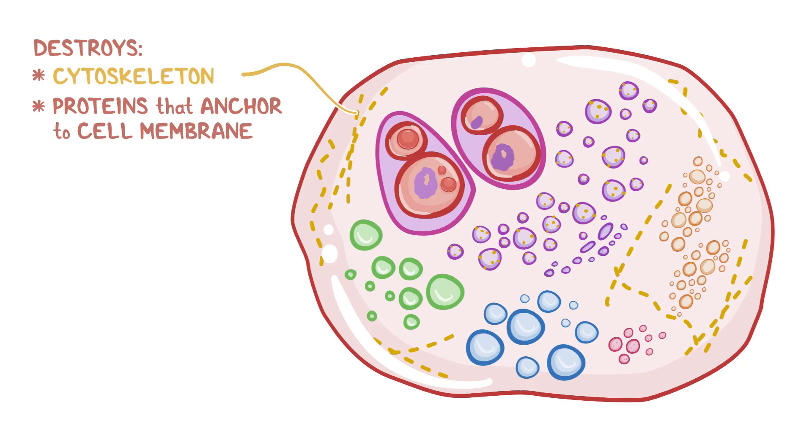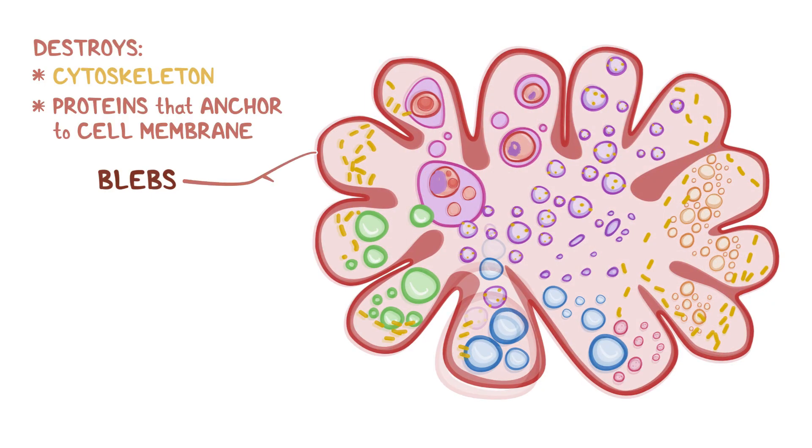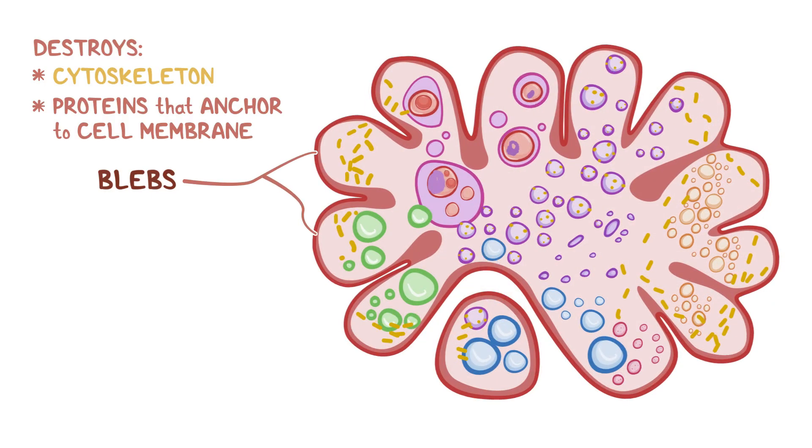As a result, the cell membrane starts to develop blebs, or bulges, in the cell membrane. The blebs are structurally weak, so they start to break off from the cell membrane.